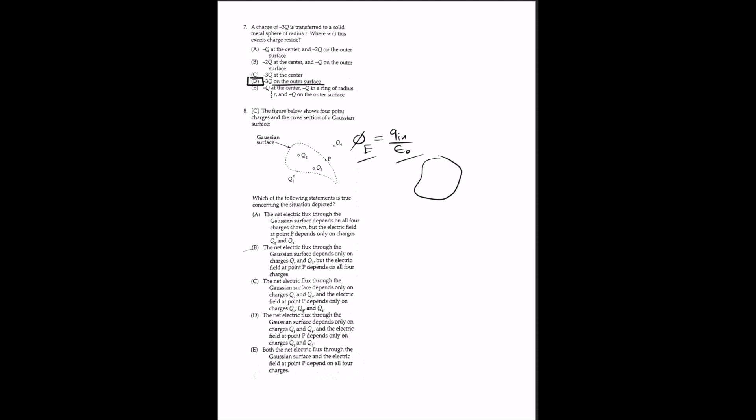For question 8, the figure shows four point charges and a cross-section of a Gaussian surface. Gauss's law states that the net electric flux through a Gaussian surface equals 1/ε times the net charge enclosed by the surface. The net electric flux depends only on the charges enclosed, but the electric field at any point depends on all charges, inside or outside. The answer is B: the net flux depends only on Q2 and Q3, but the electric field at point P depends on all four charges. Thank you for watching.